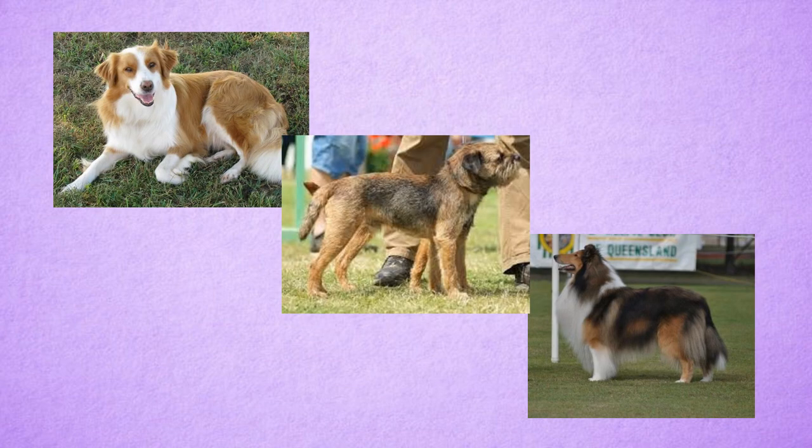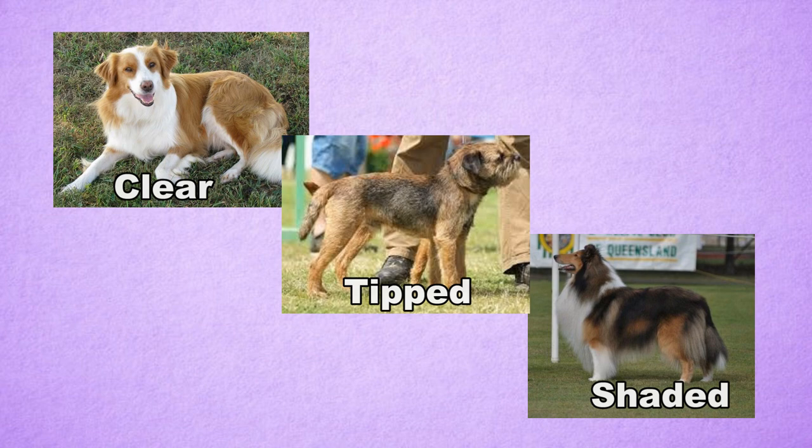Sable is the top dominant gene in the A-locus, so a dog only needs one sable allele to express it. But what exactly is sable? Sable means that the dog's fur is red but tipped with black. There are at least three types of sable patterns, but it's not certain what causes each to appear. Some speculate that sable is affected by an unidentified modifier. The three common types of sable are clear sable, tipped sable, and shaded sable.